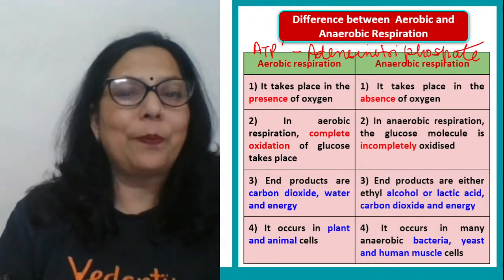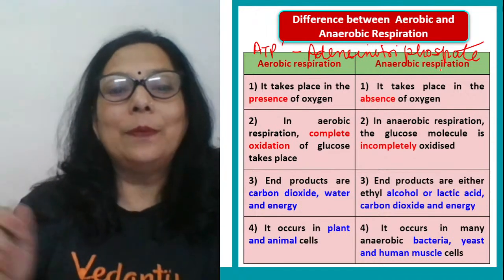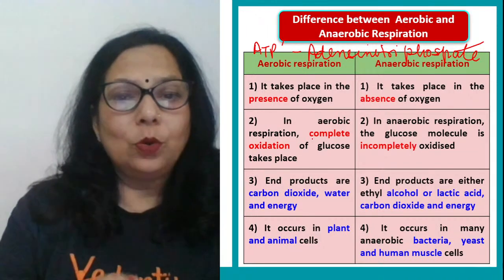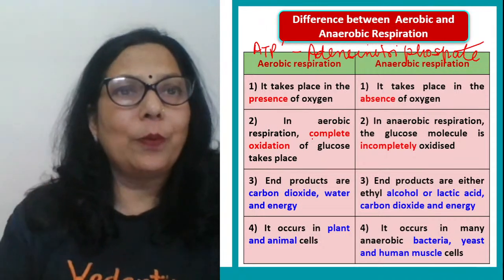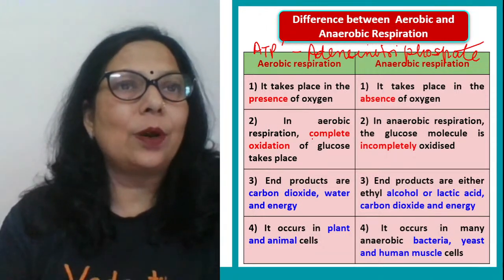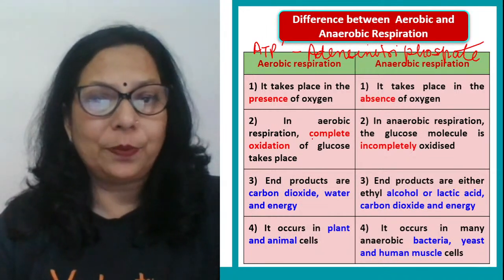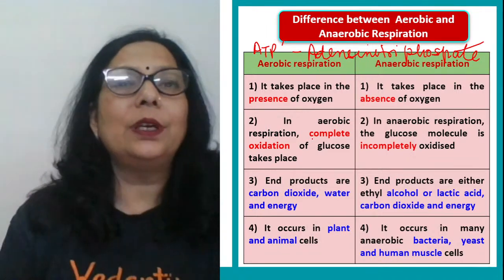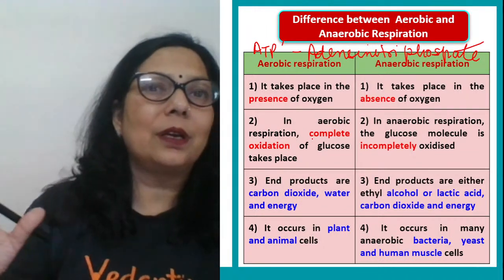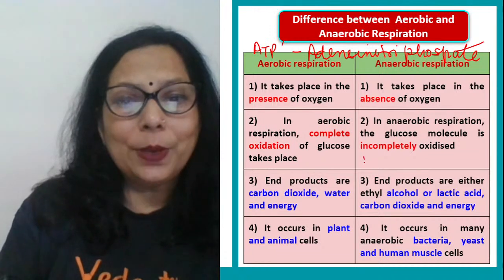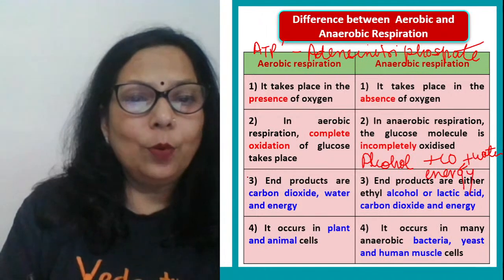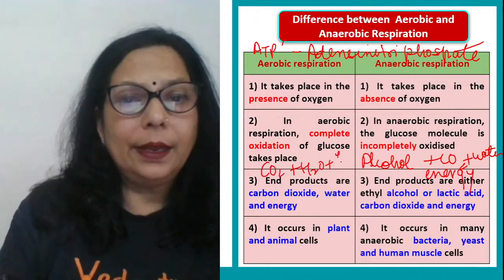Aerobic respiration takes place in the presence of oxygen. Anaerobic is in the absence of oxygen. In aerobic respiration, complete oxidation of glucose takes place. Our food is digested into the simplest form of glucose — this glucose oxidation takes place, and carbon dioxide, water vapor, and energy in the form of ATP are produced. In anaerobic respiration there is less oxygen, so the glucose molecule is not converted entirely into carbon dioxide and water — some part is converted into alcohol. So in anaerobic respiration, alcohol, CO2, water, and energy are released. In aerobic respiration, end products are CO2, water, and energy.